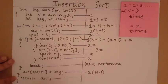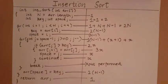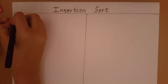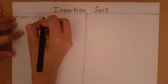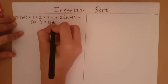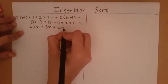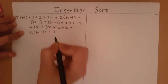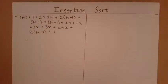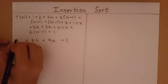After exiting the j-loop, there is one statement in the i-loop involving an indexing and an assignment — 2 primitive operations — happening n-1 times. We then return the array, which takes 1 primitive operation. Adding all stepwise calculations, we get T(n) = 1 + 2 + 2n + 2(n-1) + (n-1) + (x+1) + (x+1) + x + 2x + 3x + x + x + x + 2(n-1) + 1.